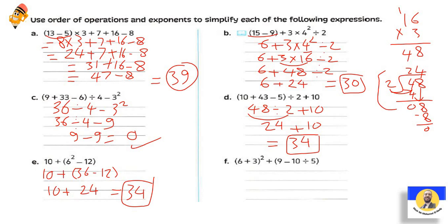The last question: (6 + 3)² + (9 - 10 ÷ 5). الـBracket الأول: 6+3 = 9. الـBracket التاني: الـDivide الأول: 10÷5 = 2، بعدين 9-2 = 7. بعدين 9² = 81. يبقى 81 + 7 = 88.